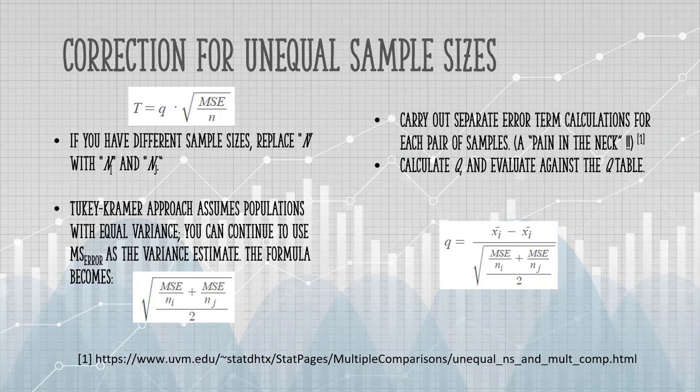This can involve quite a few additional calculations, so I'm not going to do that in this video. It is what David Howell, formerly of the University of Vermont, calls a pain in the neck. You don't really have a choice, though, if you want to compare differences in means. Most of the tests are going to require you to use a similar formula to calculate these differences. As a final step, you calculate Q and evaluate that against the Q table. And here's the formula for that.